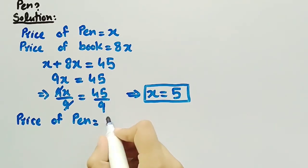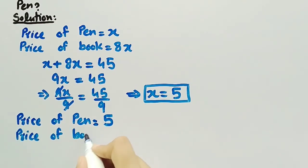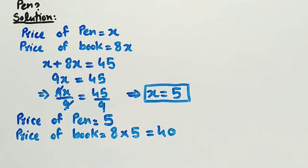So price of pen is 5 rupees. And price of book is equal to 8x. So we will find 8 multiplied by, since x is equal to 5, it will be 8 multiplied by 5 which is equal to 40. So the price of book is equal to 40. And this is the required solution.